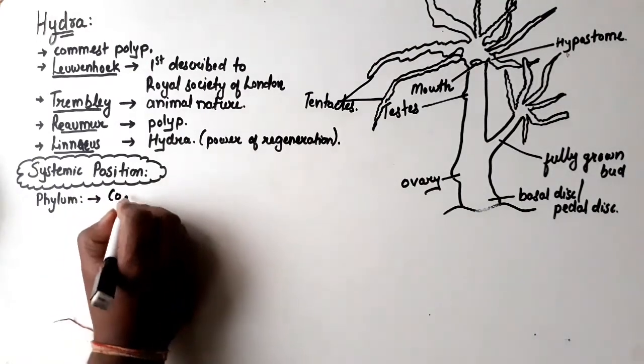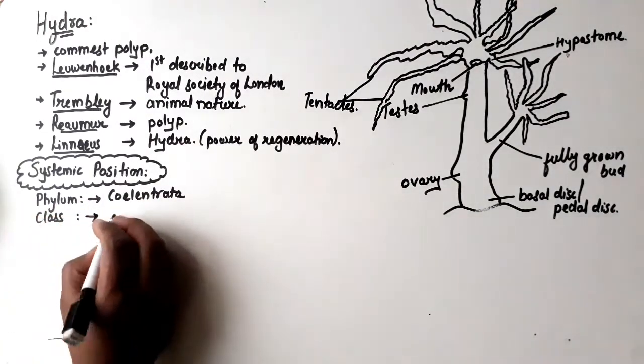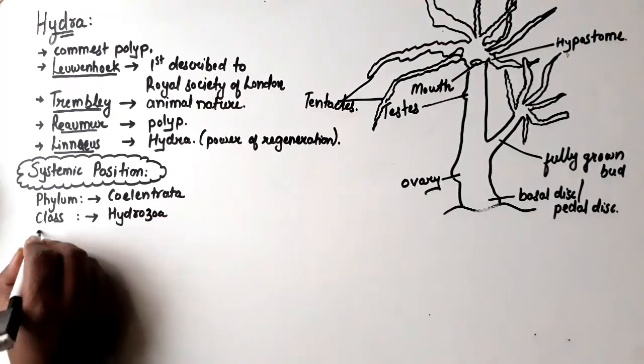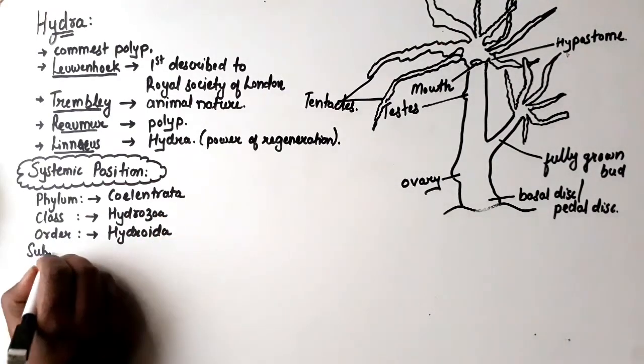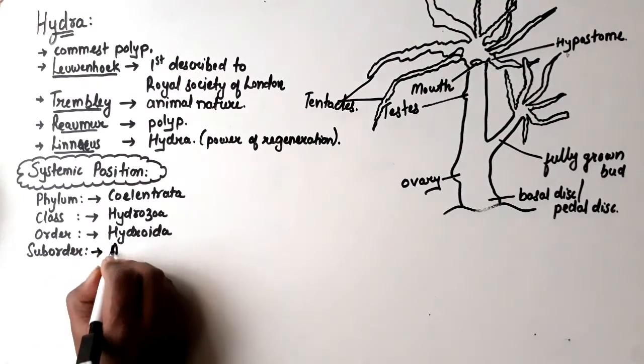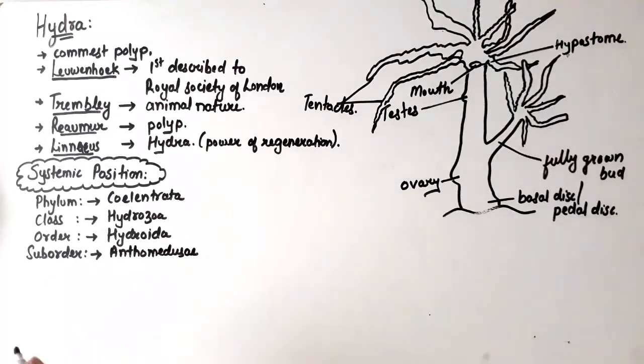Here we will study phylum and class. The phylum is Coelenterata, the class is Hydrozoa, the order is Hydroida, and the suborder is Anthomedusae.